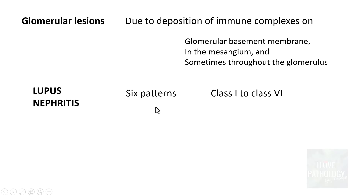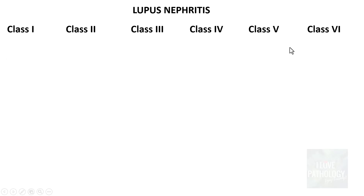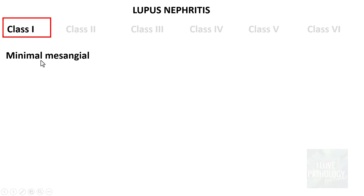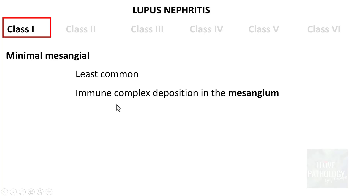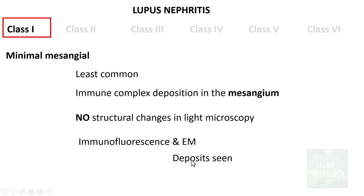Lupus nephritis has 6 different morphological patterns from Class 1 to Class 6. Class 1 is the least common and Class 4 is the most common pattern. Class 1 is referred to as minimal mesangial lupus nephritis, where immune complex deposition is seen in the mesangium with no structural changes on light microscopy. H&E stained sections show no morphological features, but immunofluorescence and electron microscopy do reveal immune complex deposition.